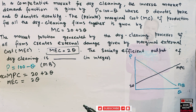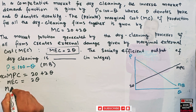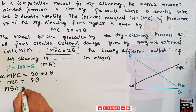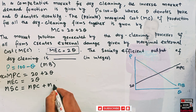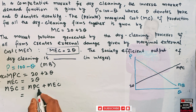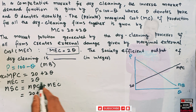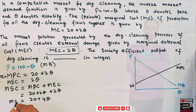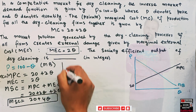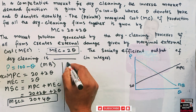To find the socially optimal level of output, we need to find the marginal social cost. What is marginal social cost? Simply, when we add up the marginal private cost and marginal external cost, we get the marginal social cost. MPC is 20 plus 2Q, and our marginal external cost is 2Q, which means we have 20 plus 2Q plus 2Q equals 20 plus 4Q. So this is our marginal social cost.